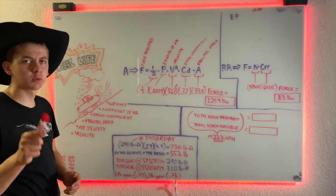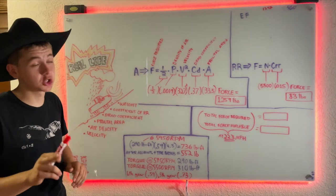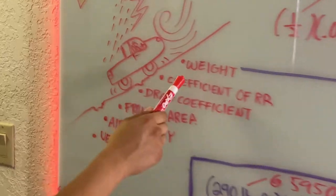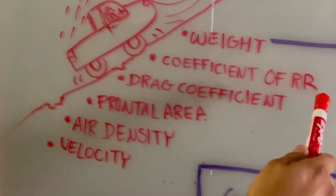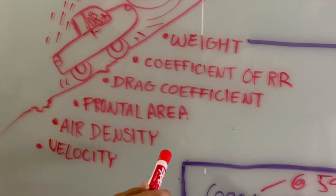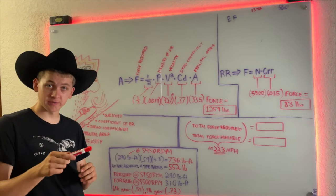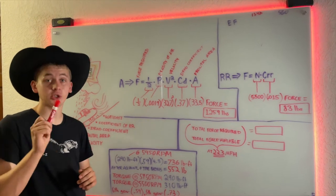We need to know a few more specifications, some of which you can easily Google, all of which you can not-so-easily calculate. We need to know the weight, coefficient of rolling resistance, drag coefficient, frontal area, air density, and velocity. We'll start by calculating the aerodynamic drag on our vehicle at its top mechanical speed, which is 223 miles an hour.